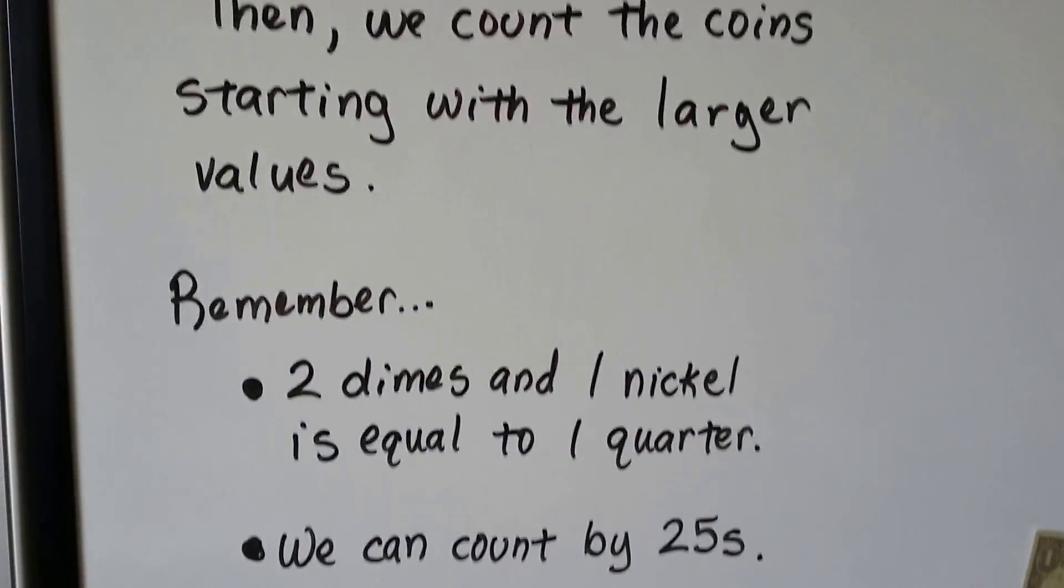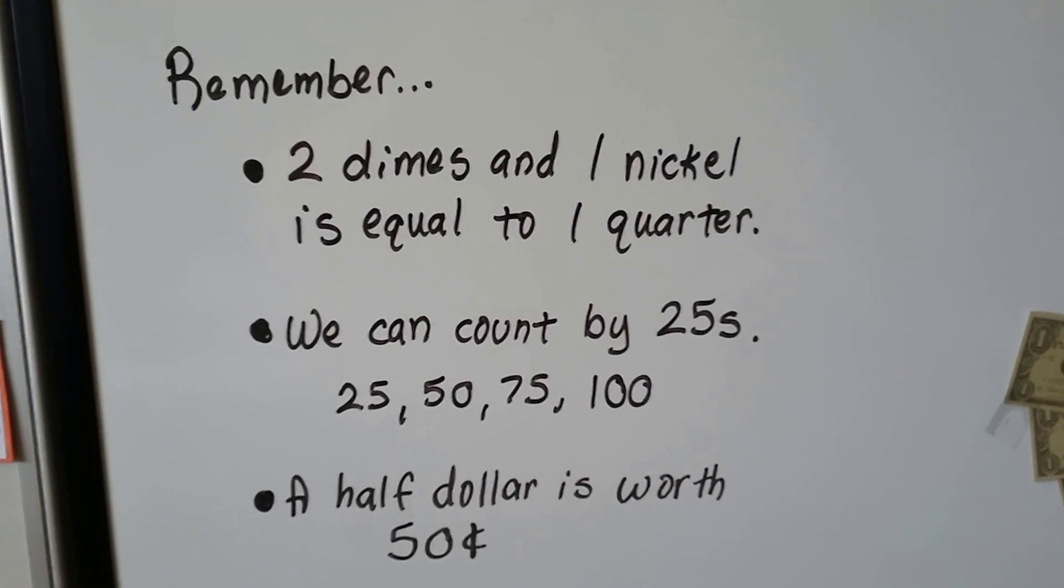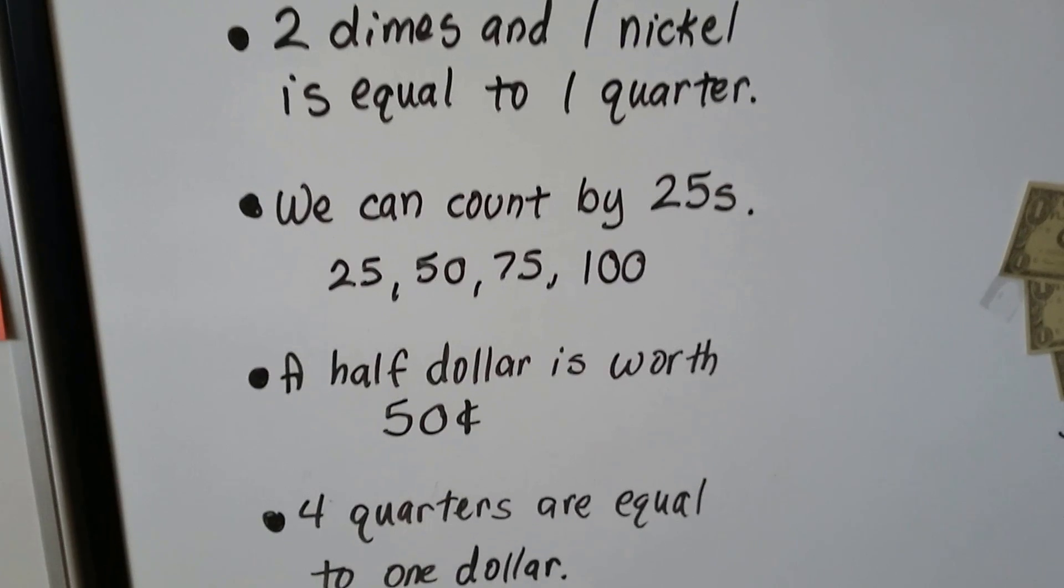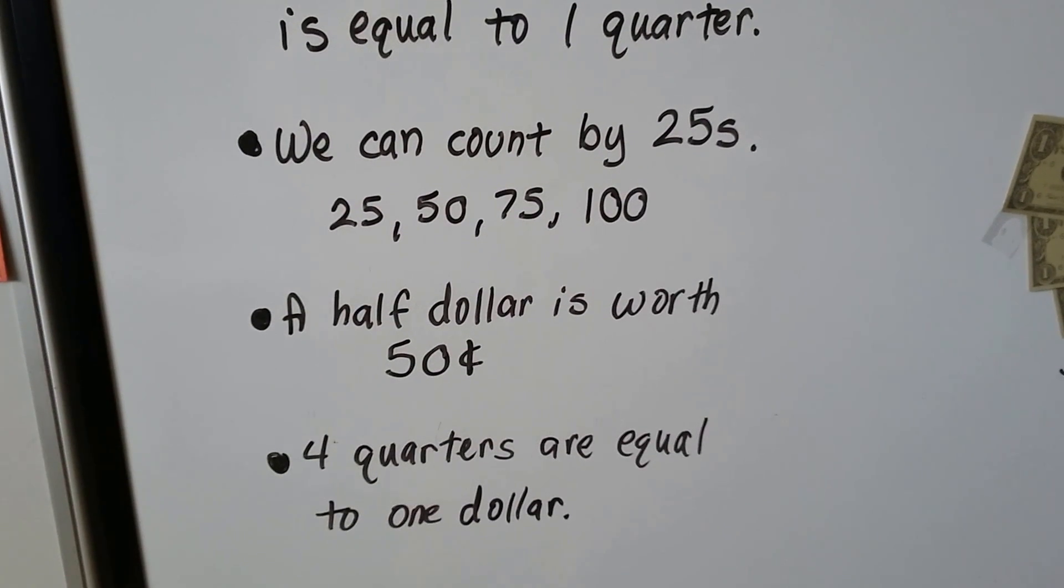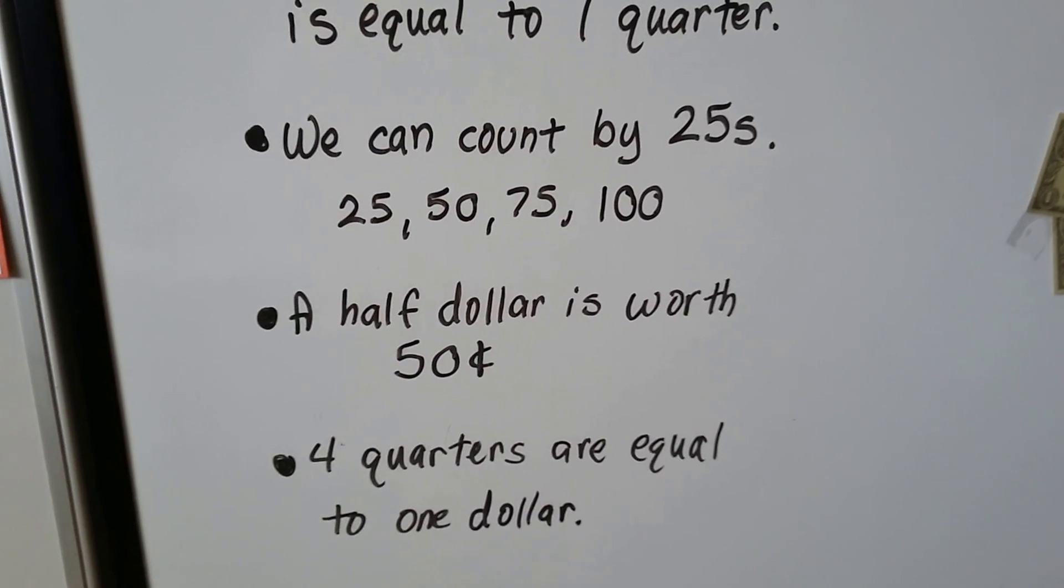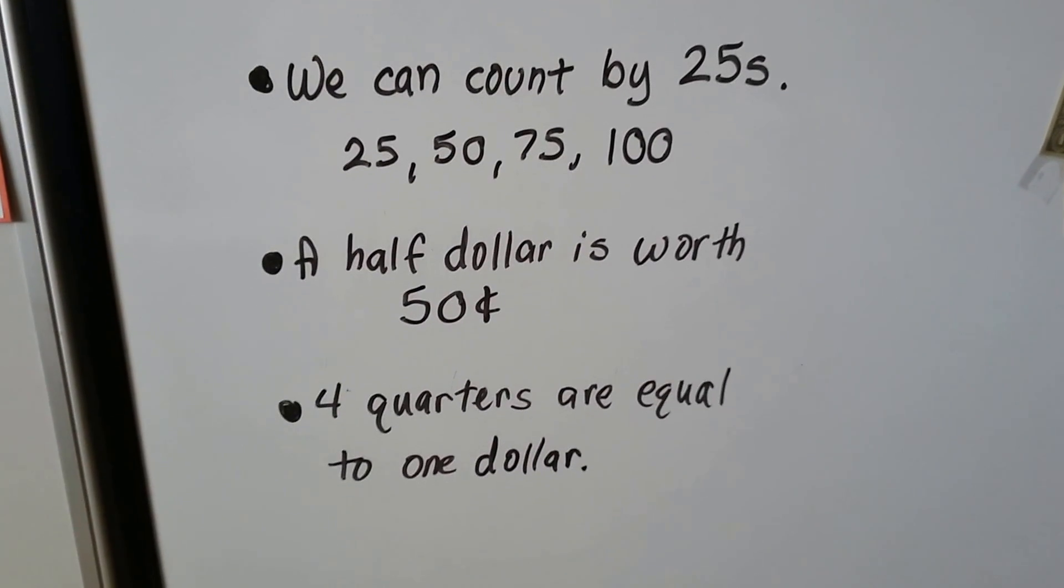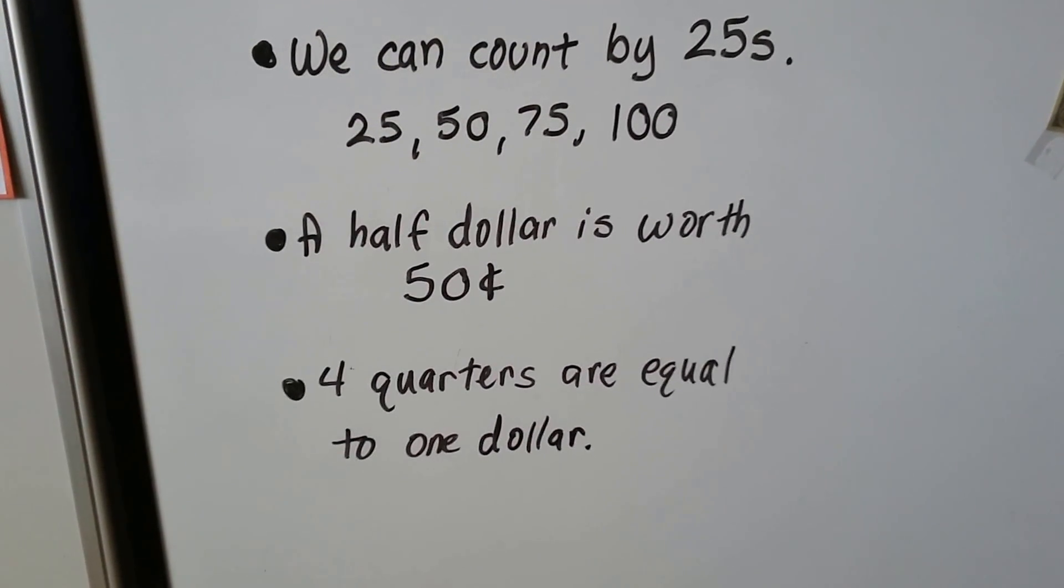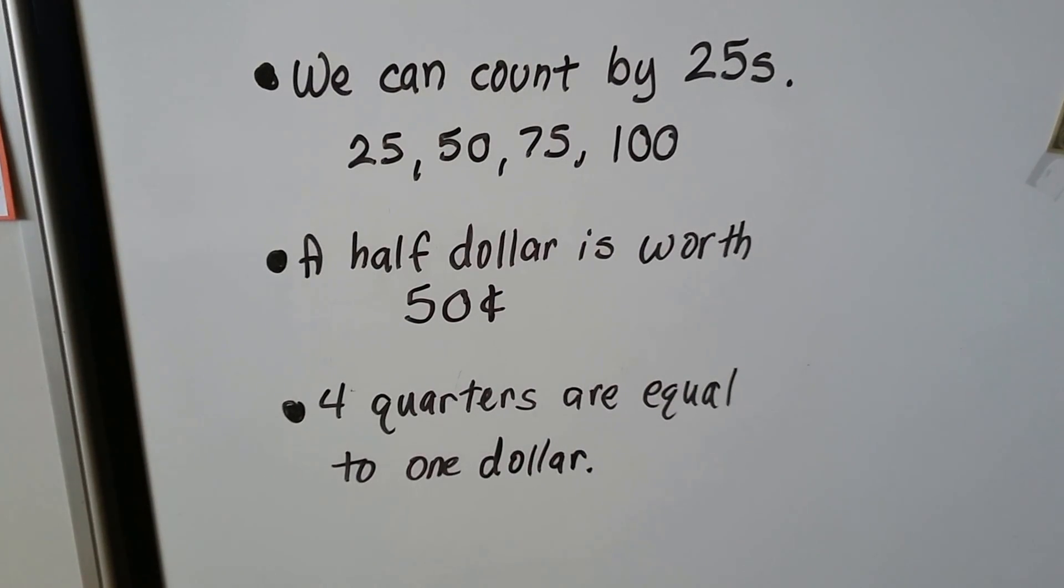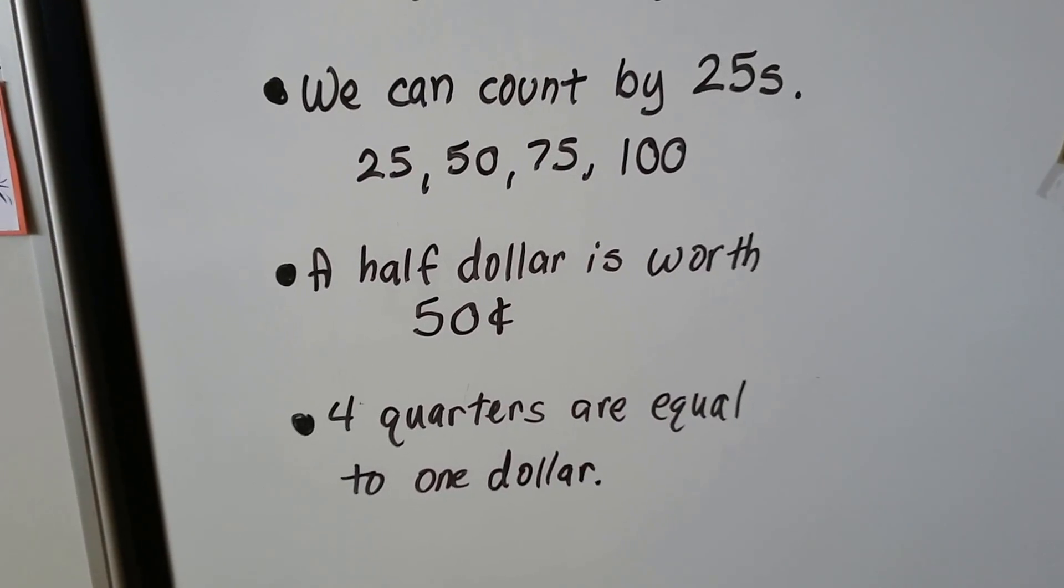There are a few things to remember that we've learned so far. Two dimes and one nickel is equal to a quarter. We can count by 25s: 25, 50, 75, 100. So we can count quarters that way. And a half dollar is worth 50 cents. Remember, four quarters are equal to one dollar. So we might be able to regroup four quarters as one dollar bill.